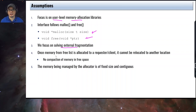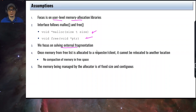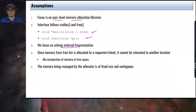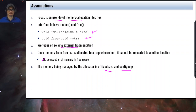Once memory from the free list is allocated to a client or requester, it cannot be relocated to another location. This means once memory is allocated or assigned to a process, it stays in physical memory — it cannot be moved around. So there is no compaction involved. The memory being managed by the allocator is of fixed size and contiguous, which is relevant as we will see later.